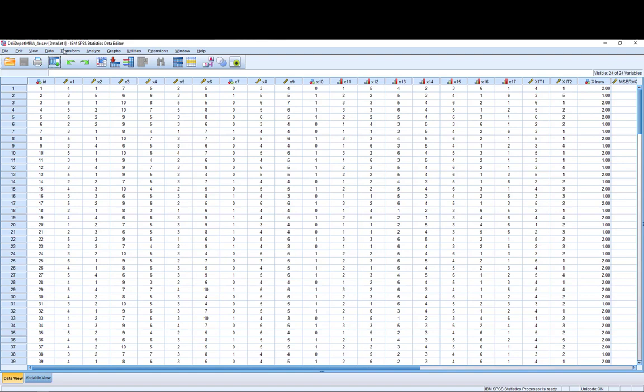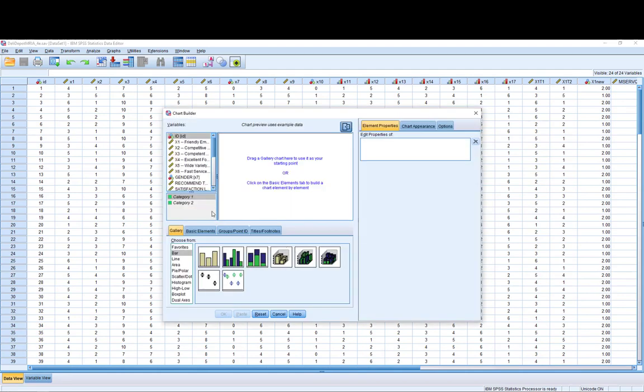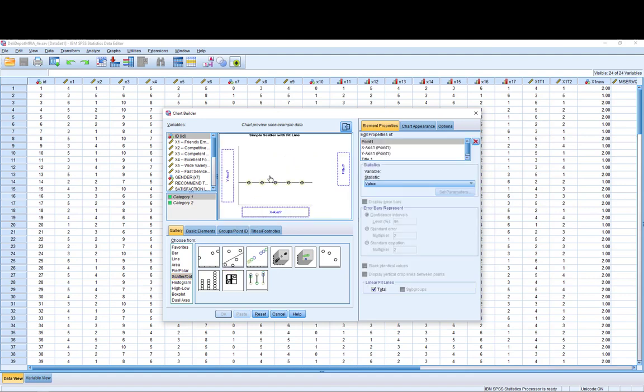To do a scatter plot we go to Graphs, Chart Builder. We've already defined our variable properties so we don't need to do that. Down the bottom you have a thing called gallery and here you see scatter. I select scatter from the list of options. I'm going to use the simple scatter with fit line because the scatter plot is not necessarily the easiest thing to read.